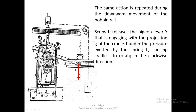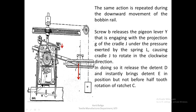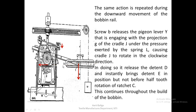As soon as B releases the pigeon lever, it causes cradle J to rotate — this time in the clockwise direction. The same finger gives a smart blow to detent D and releases it, but at the same time quickly brings E into position. By the time D is released and E comes into position, the ratchet is able to turn half a tooth because of the weight.